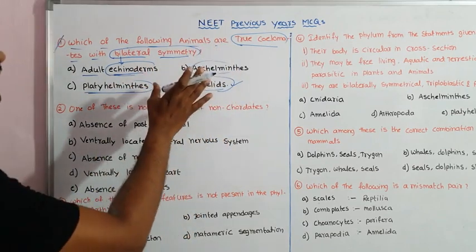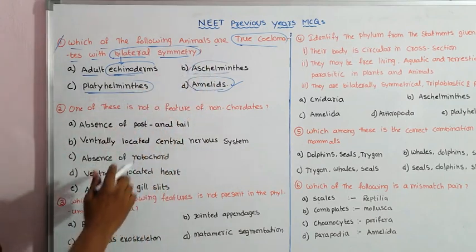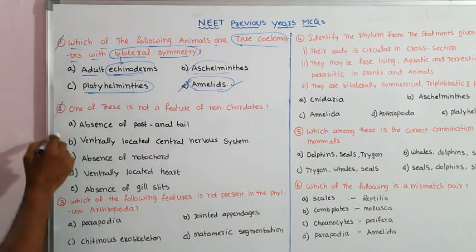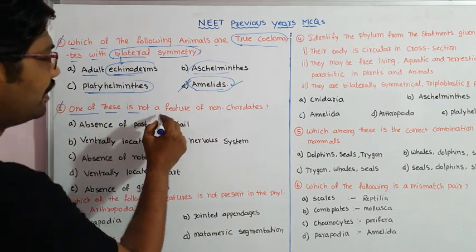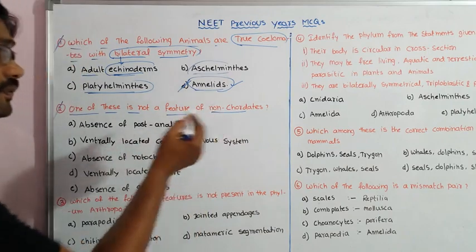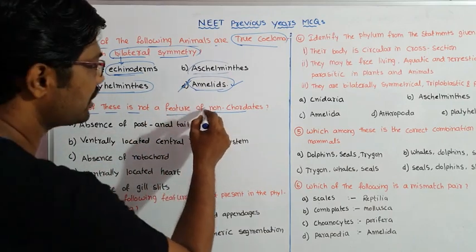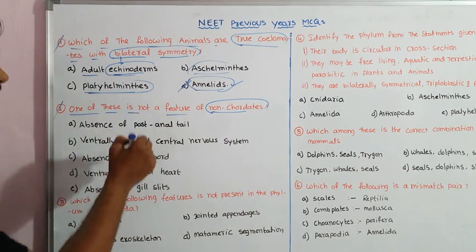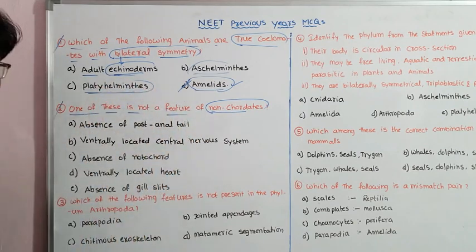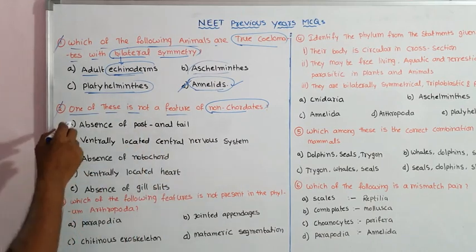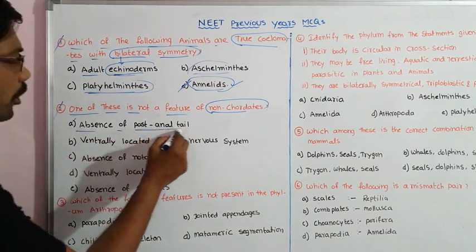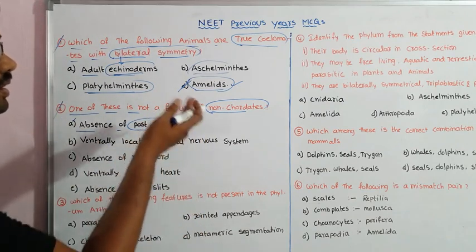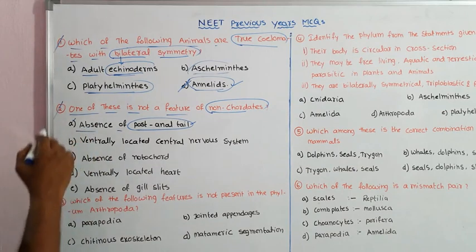Aschelminthes or Platyhelminthes have bilateral symmetry but are not true coelomates. We analyze the options for true coelom. So we can identify the correct option from this analysis. This is the correct answer for the first question.